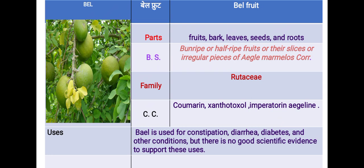Biological source: one ripe or half-ripe fruit, or their slices or irregular pieces of Aegle marmelos, family Rutaceae. Chemical constituents include coumarins, xanthotoxin, imperatorin, aegeline, and uses — Bael is used for cultivation, diarrhea, diabetes, and other conditions, but there is no good scientific evidence to support these uses.